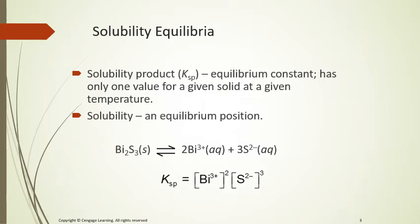Just like all other forms of the equilibrium constant, the solubility product constant Ksp has only one value for a given solid at a given temperature. When the temperature changes, the K value changes. The solid reactant is not included in the expression — only the ions in the numerator raised to the power of their coefficients. For example, Bi2S3 breaks down into 2Bi³⁺ and 3S²⁻, so Ksp equals [Bi³⁺]² times [S²⁻]³.